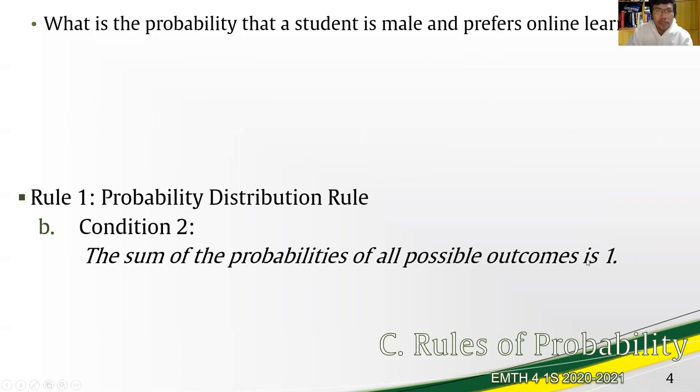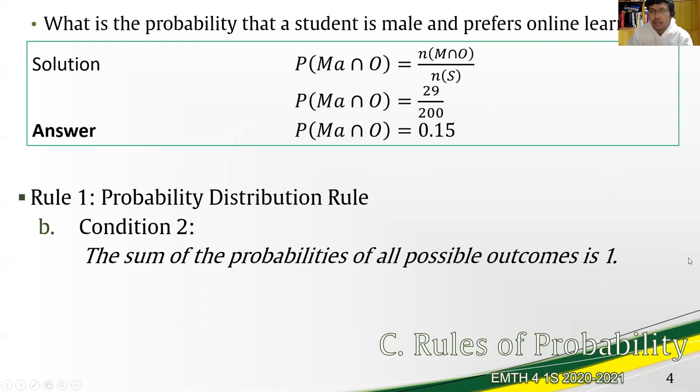Let us answer a question in relation to that given the distribution of the table. What is the probability that a student is male and prefers online learning? The solution would be counting or identifying the number of males who prefer online learning, that is 29, and divide that by the value of the total number of elements in the sample space, which is 200. That would give us 0.15, and this is congruent with condition 1 of rule number 1, where 0.15 is greater than 0, but is less than 1.